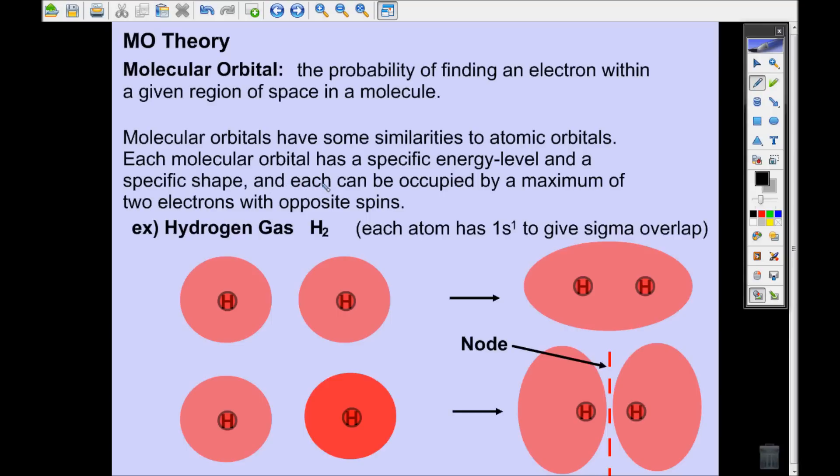The Aufbau principle is followed. That means the lowest energy orbitals are filled first, and Hund's rule is also followed, and so is the Pauli exclusion principle. You can only have two electrons in an orbital, they have to have opposite spin, and you have to put one in each orbital of equal energy before they start pairing.